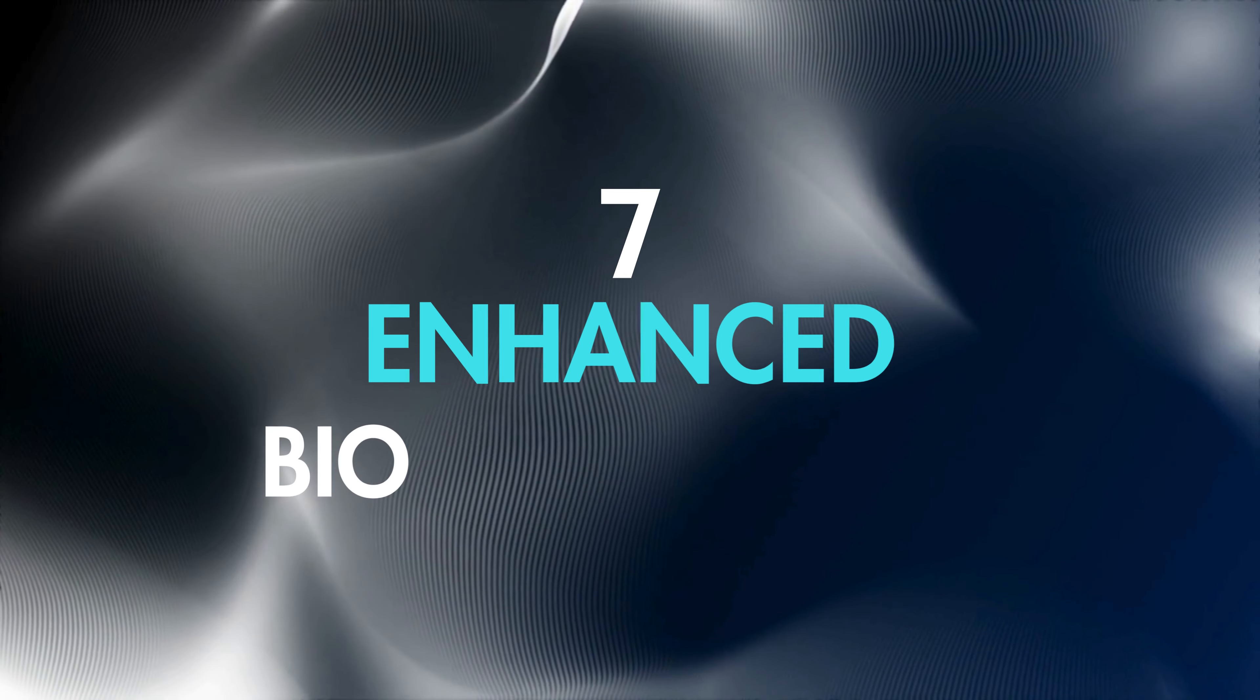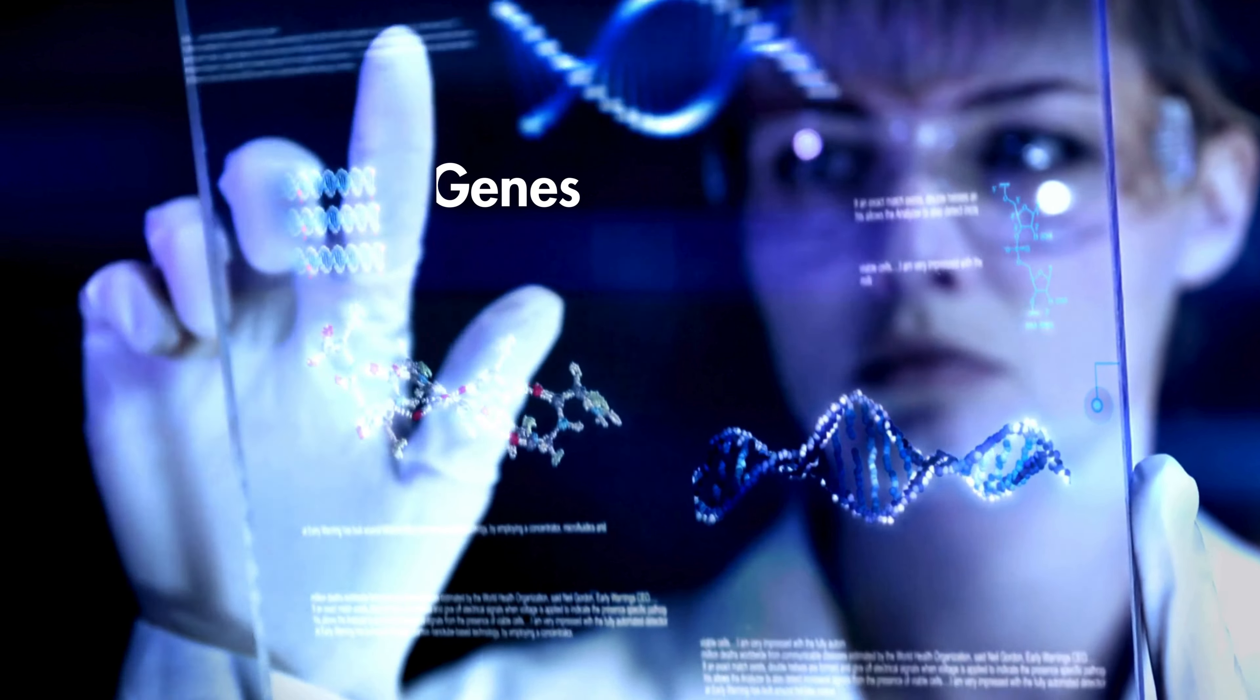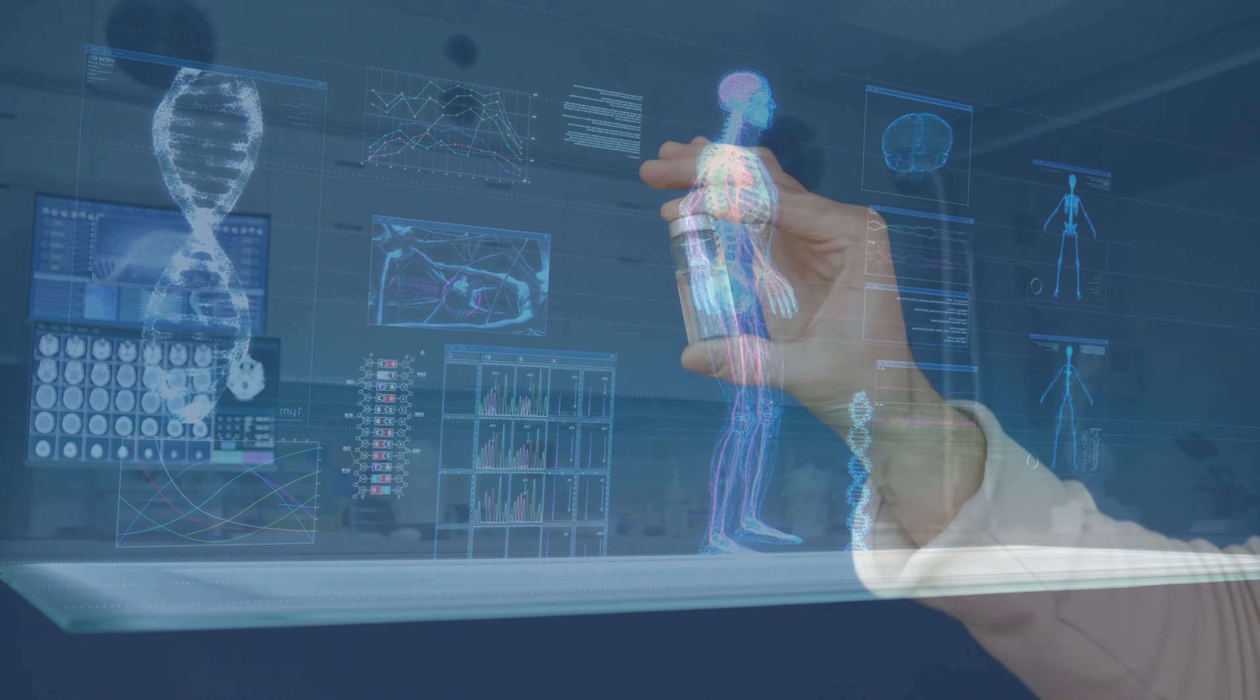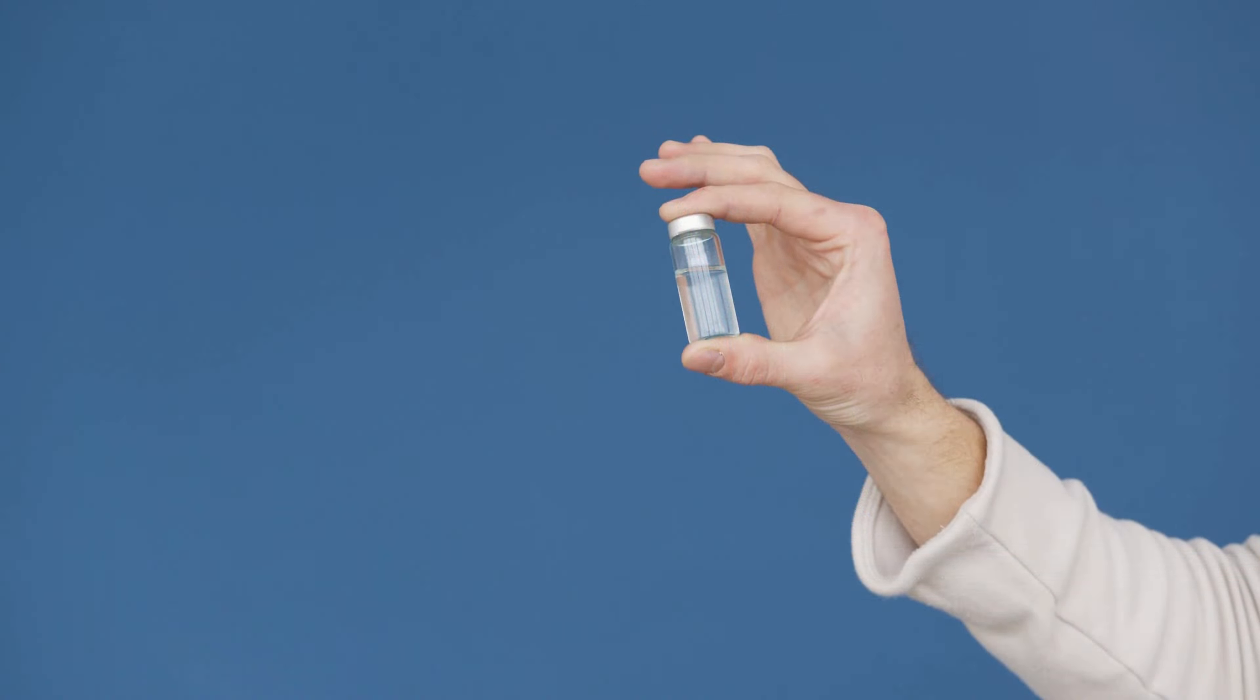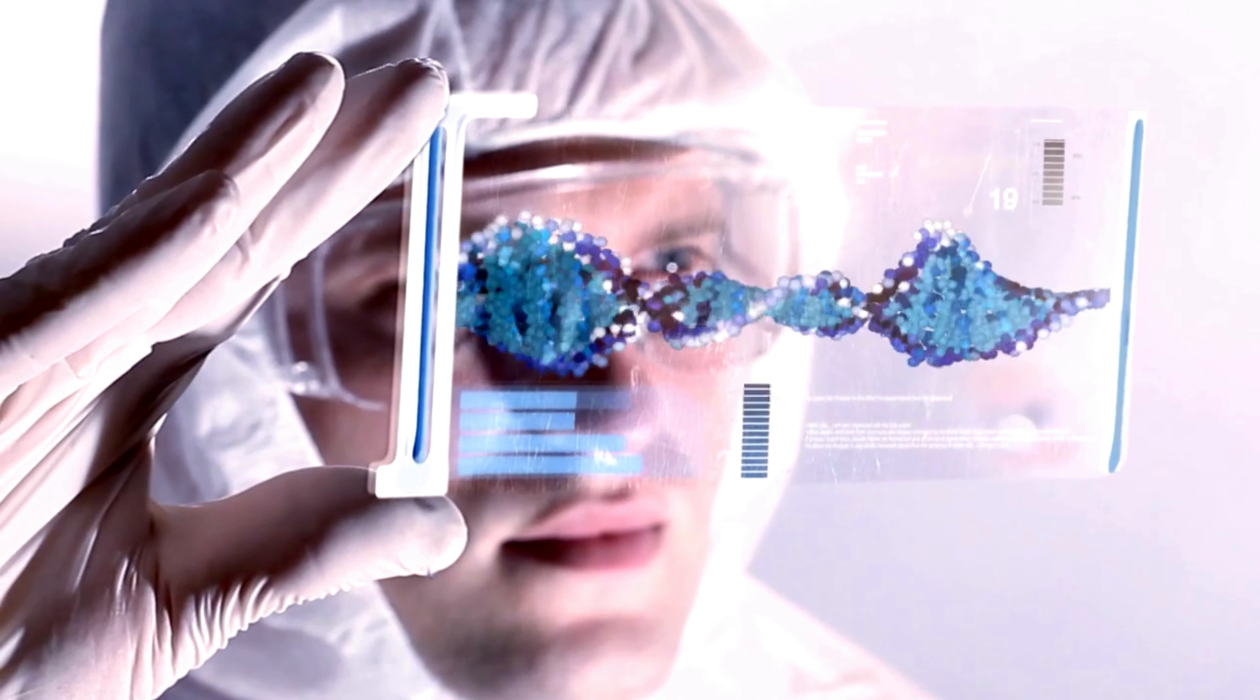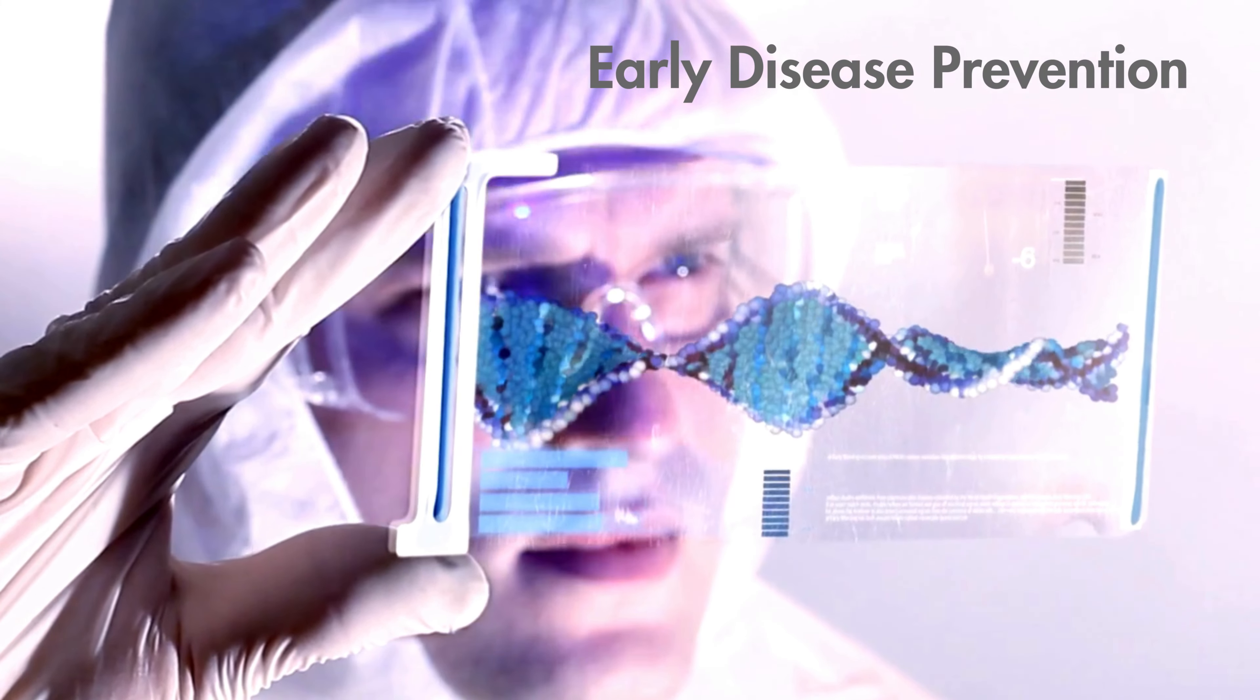Number 7: AI will enhance biotechnology. AI will identify genes associated with diseases and develop targeted treatments. For example, AI could help find a cure for Parkinson's by identifying and editing genetic mutations. Imagine AI helping scientists develop treatments that can fix genetic issues before they cause diseases.